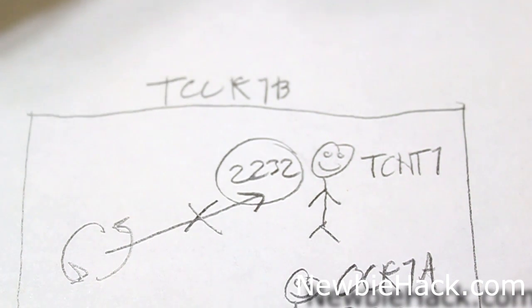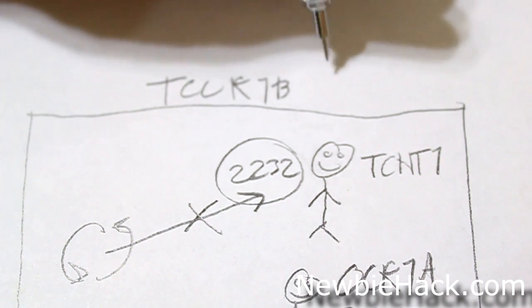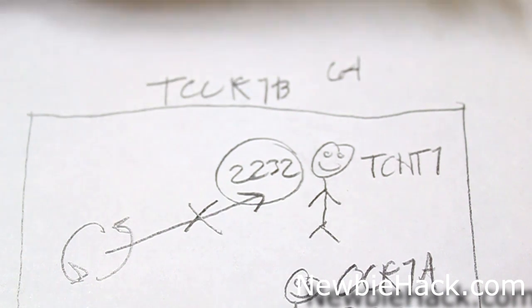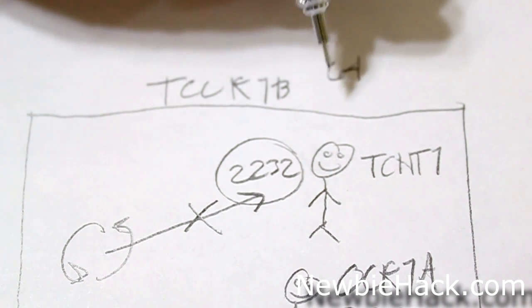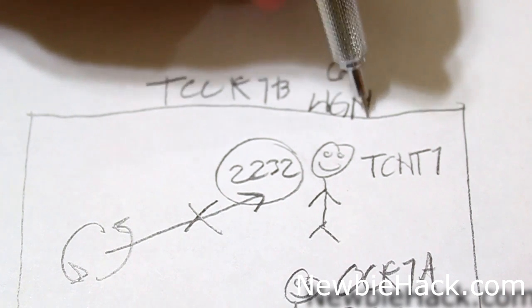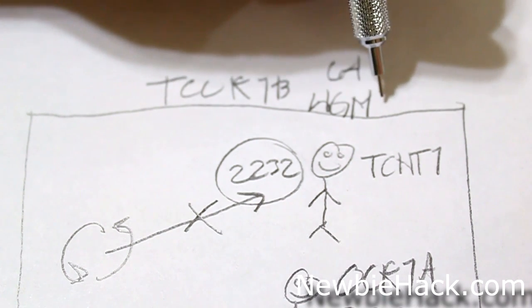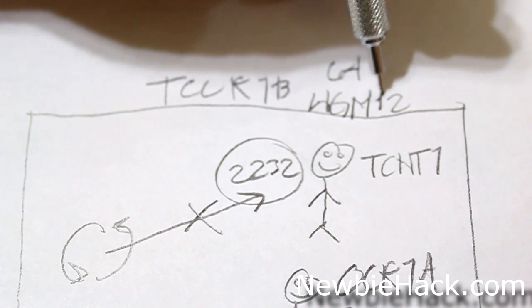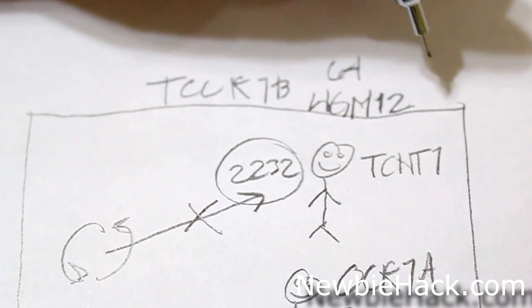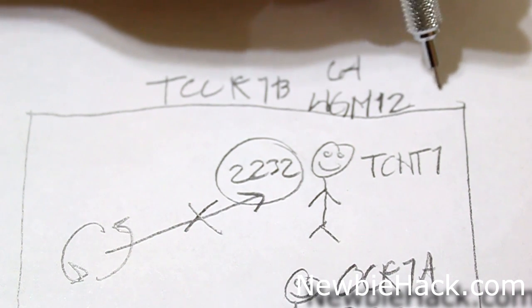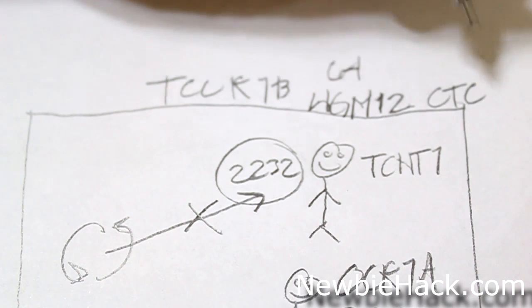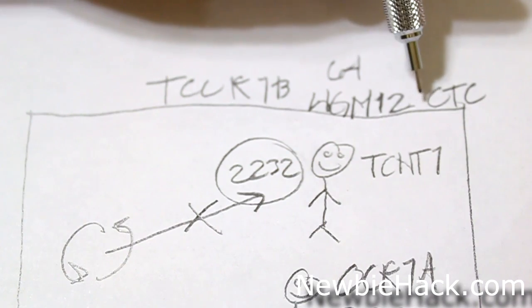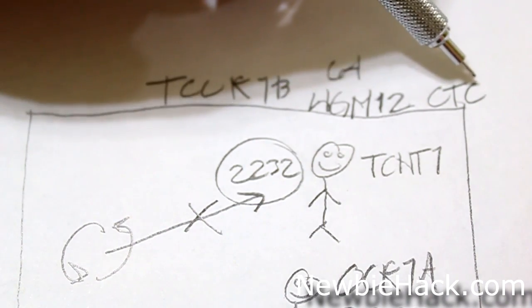A switch called WGM, which is the waveform generation mode, and it will be setting the switch for the one and two. And we're going to set it to CTC mode, and CTC means clear timer on compare.